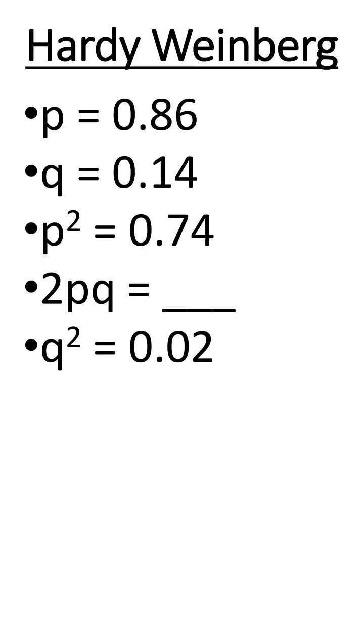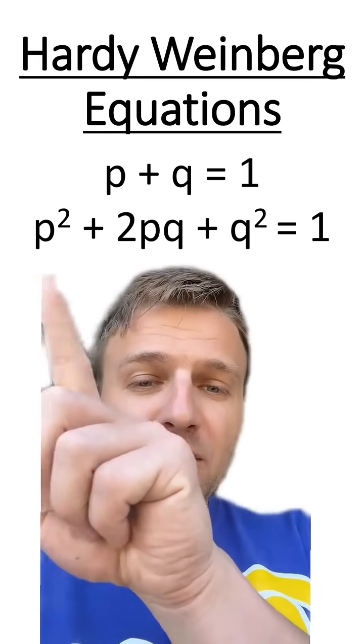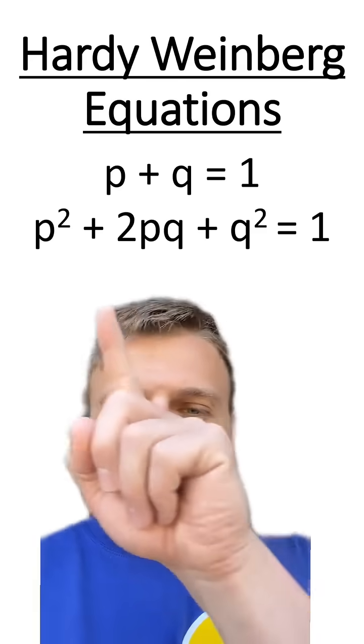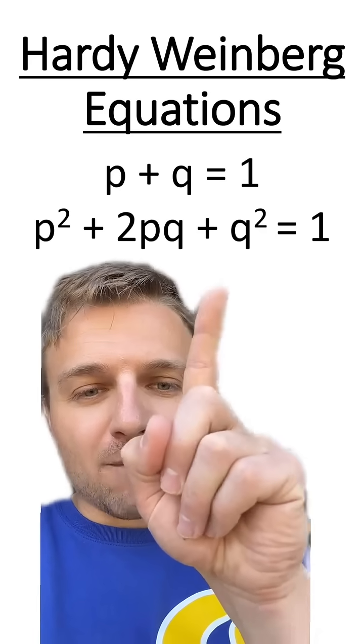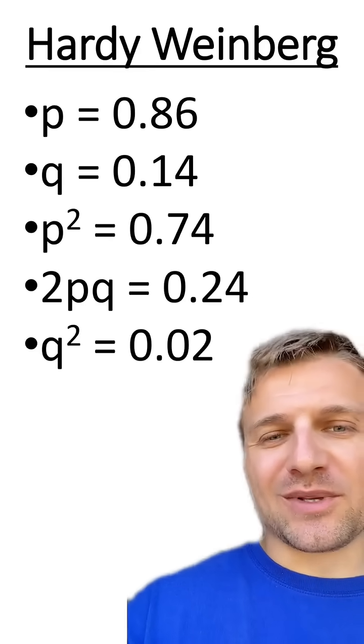Now, since we already have q squared and p squared, we can figure out what 2pq is. That's because p squared plus 2pq plus q squared equals 1. We have these two variables, which means to find this variable, we're just going to take 1 minus these two variables. Which means 2pq is going to equal 0.24.